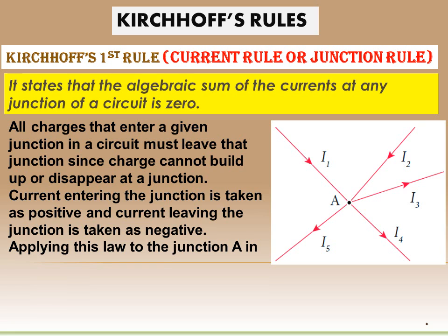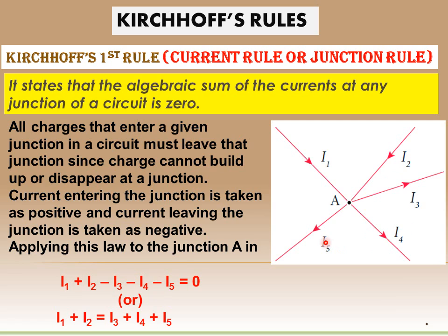Applying this law to junction A, we have currents I1, I2, I3, I4, and I5 — imagine these represent your house and your neighbor's houses. According to Kirchhoff's rule: I1 plus I2 minus I3 minus I4 minus I5 equals zero. So I1 and I2 together equal I3, I4 and I5. The current in each house's circuit is equalized with the others, and the net current at any junction is zero.